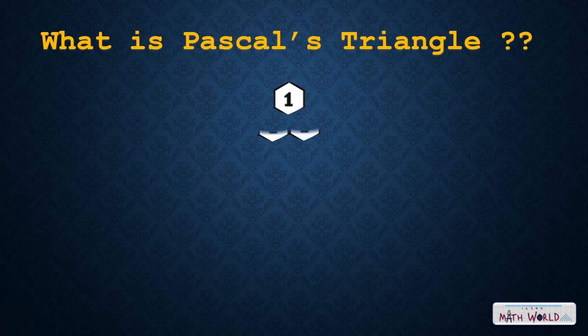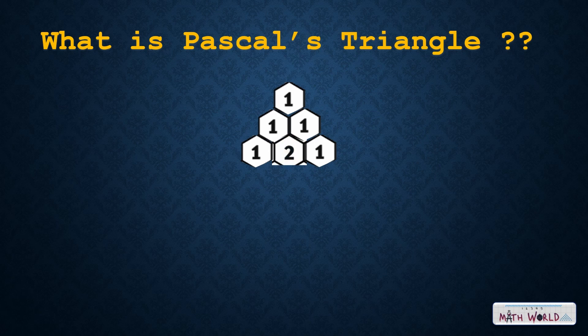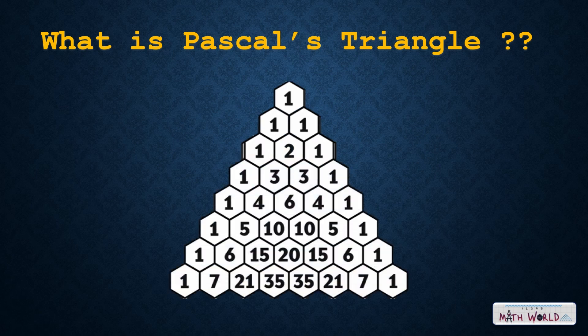The second row is 1 and 1, which is the sum of the two 1s in the first row. The third row is 1, 2, 1, which is the sum of the 1 and 1 on the second row and the ones on the left and right of the row above it. And so on. As you can see, each number in Pascal's Triangle is the sum of the two numbers directly above it.